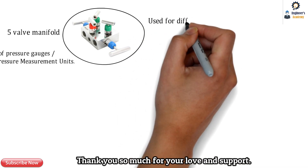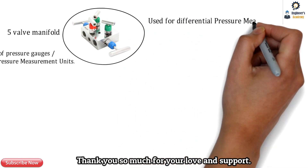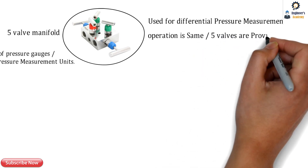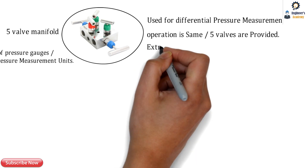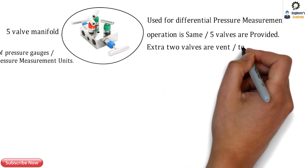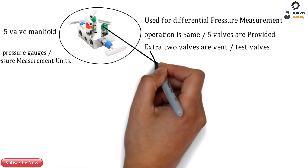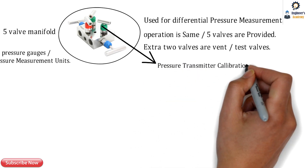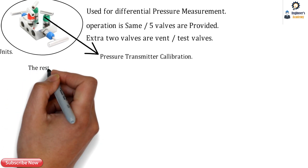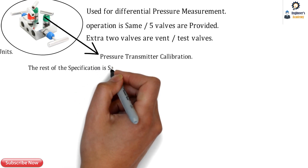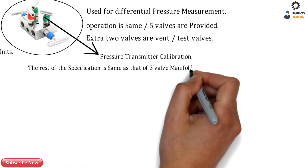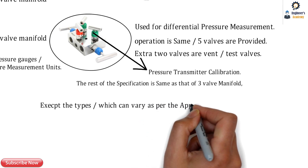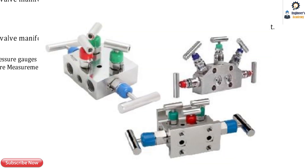The five-way manifold is also used for differential pressure measurement. Its operation is the same as the three-way manifold, except that five valves are provided. The extra two valves, depicted in green, are vent or test valves. Just as the two-way manifold allows remote calibration of a pressure transmitter, the five-way manifold allows remote calibration of a differential pressure transmitter. The remaining specifications are the same as the three-way manifold, except the types can vary per application.